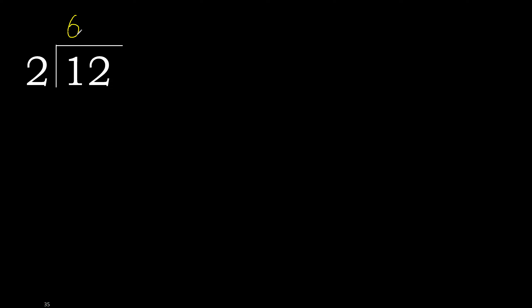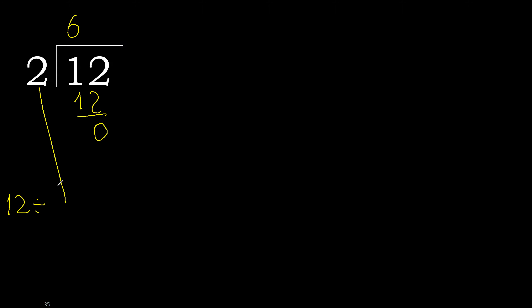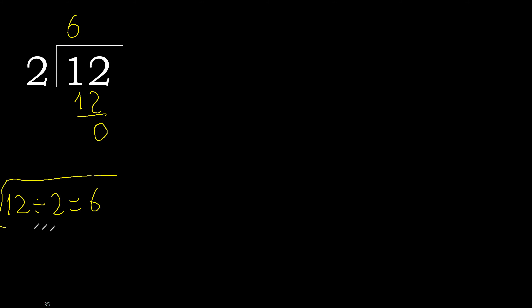2 multiplied by 6 is 12. It's not greater. 12 minus 12 is 0. 0 and here there is no number, therefore finish it. 12 divided by 2 is 6. Ok.